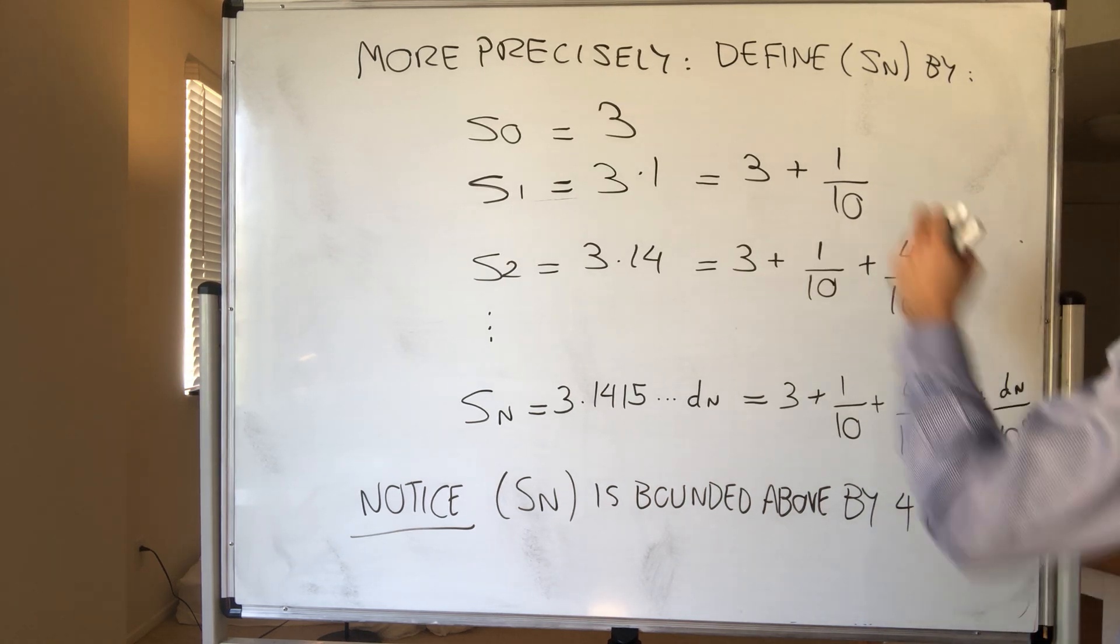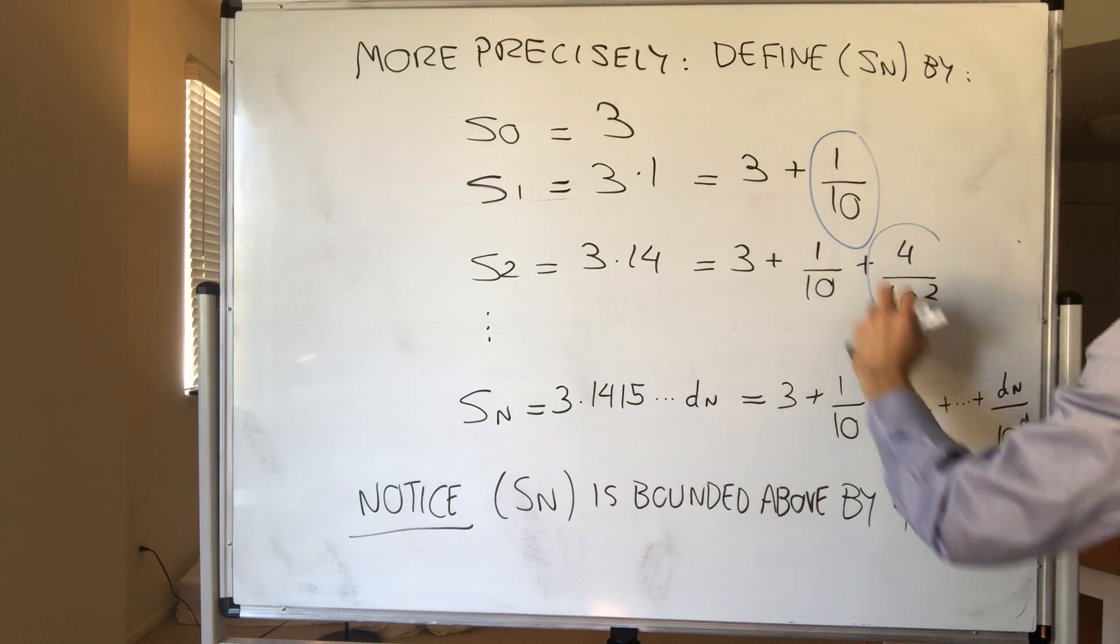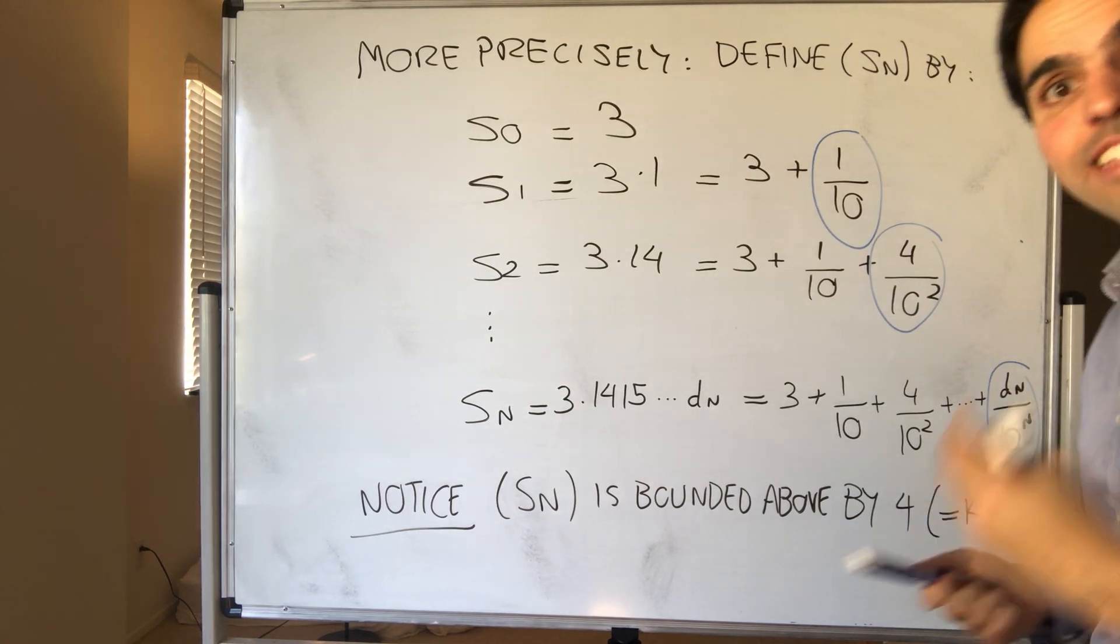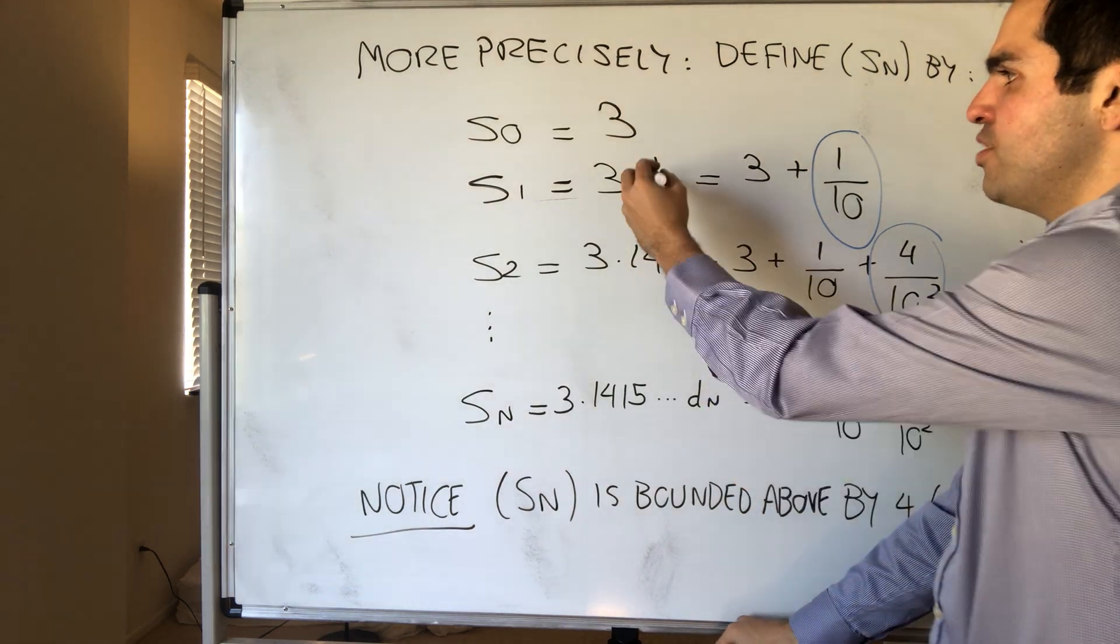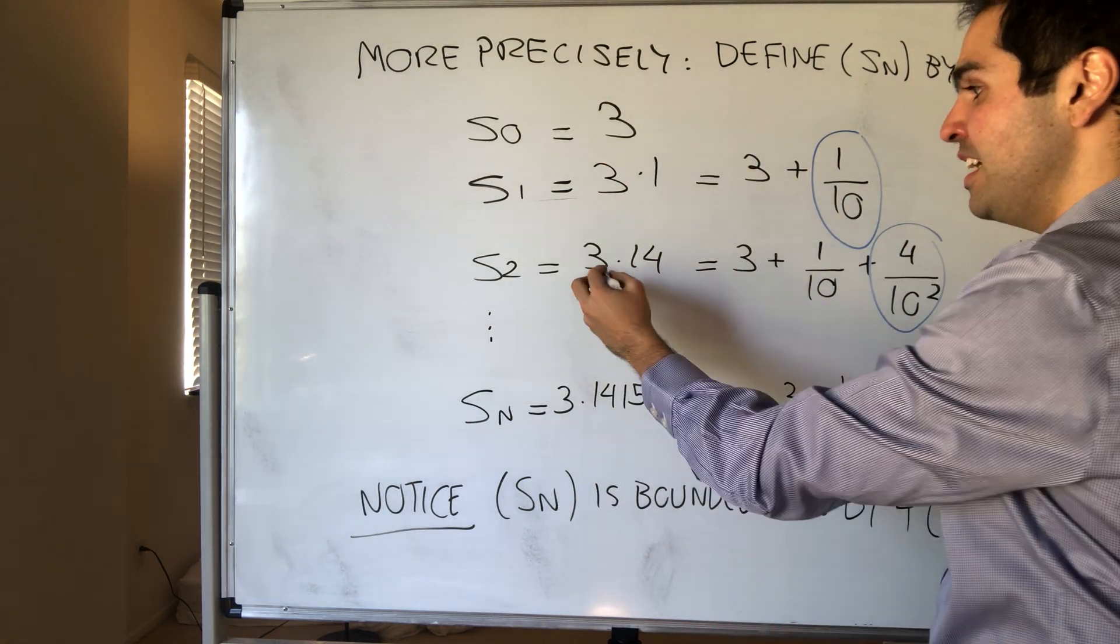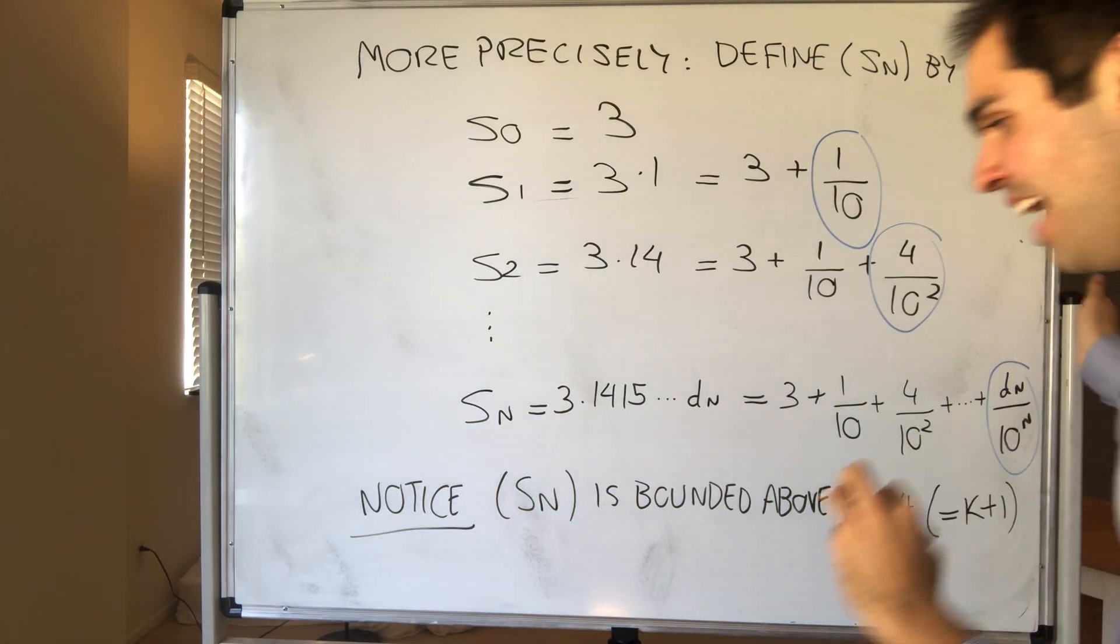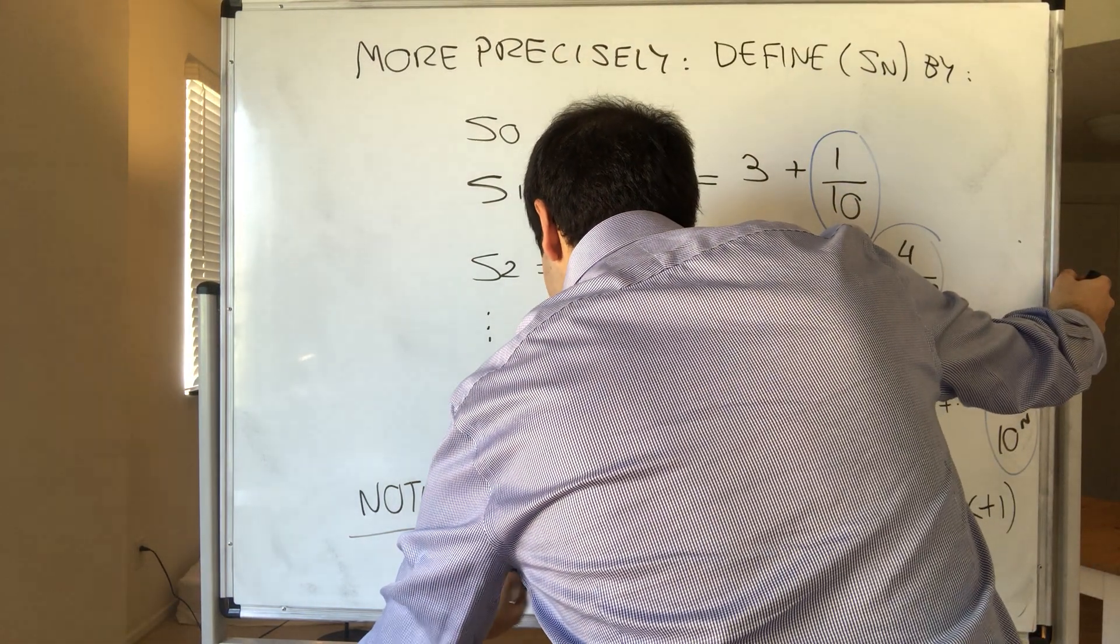And not only that, notice at each step, we're adding positive terms. So actually, this sequence is increasing. So 3.1 is bigger than 3, 3.14 is bigger than 3.1. So actually, Sn is also increasing.